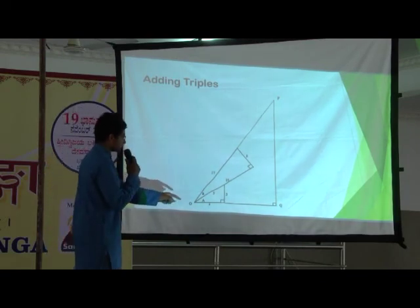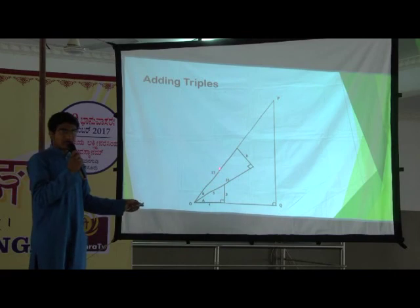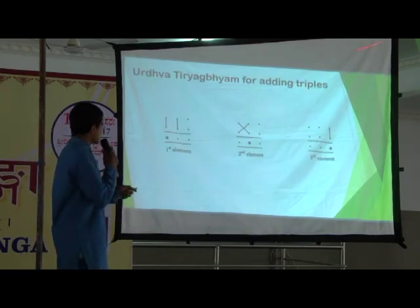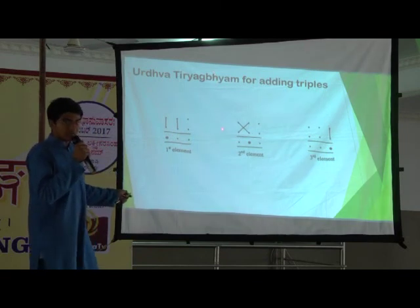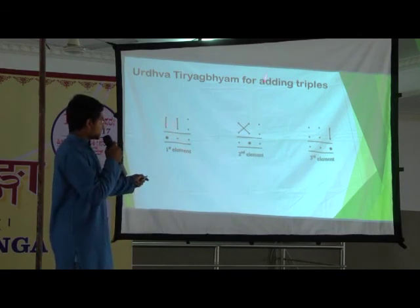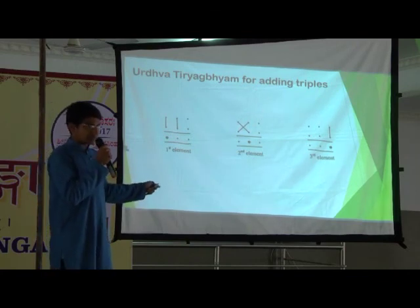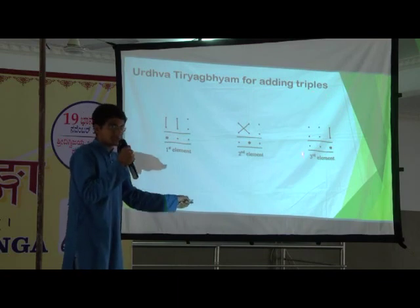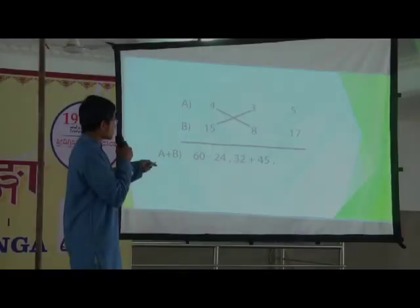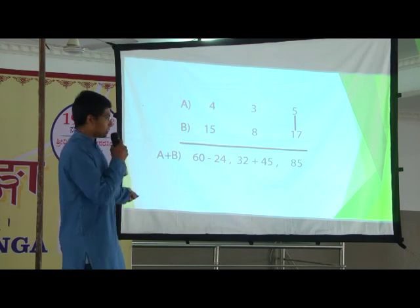Let's say I have a triangle 4, 3, 5 subtending angle A and another triangle 15, 8, 17 subtending angle B. I want to add these two angles — I want to find OQ, QP, and OP. What I will do is: the base is multiply vertically and find the difference; the height requires adding the products after multiplying crosswise; and the hypotenuse is merely the product of the two hypotenuses. By calculating, we find the triple to be 36, 77, 85.